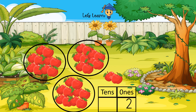So write 2 in ones. And how many groups of 10 apples are there? Let's count the number of groups: 1, 2, 3. So there are three groups of 10 apples, so we are going to write down 3 in the tens column. So how many apples are there altogether? There are 32 apples — 32.